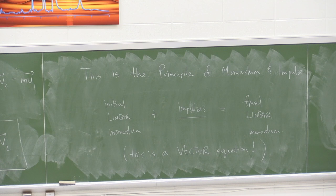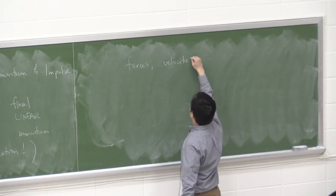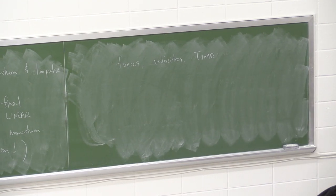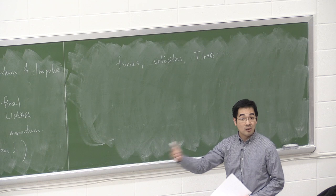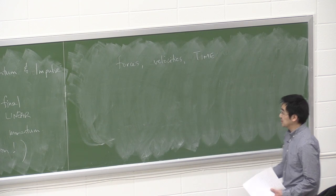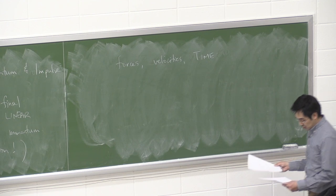Where is this most useful? Work and energy is best when you have forces, velocities, and displacements. Newton's second law is best when you need accelerations. Momentum and impulse is best when you have forces, velocities, and time. If a question involves those three elements, use momentum and impulse — it comes straight from Newton's second law, but gives the answer faster and more straightforwardly.